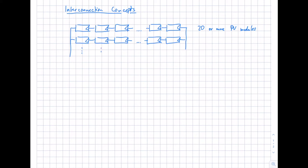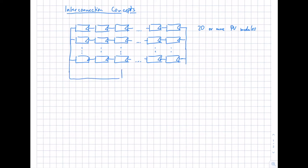So we have two strings — let's say we have more strings: three, four, whatever. The number of strings again depends on the technical parameters of the inverter, as there is an upper limit for the maximum current the inverter can handle. Here at the bottom, we have our inverter, connecting all the strings to it.